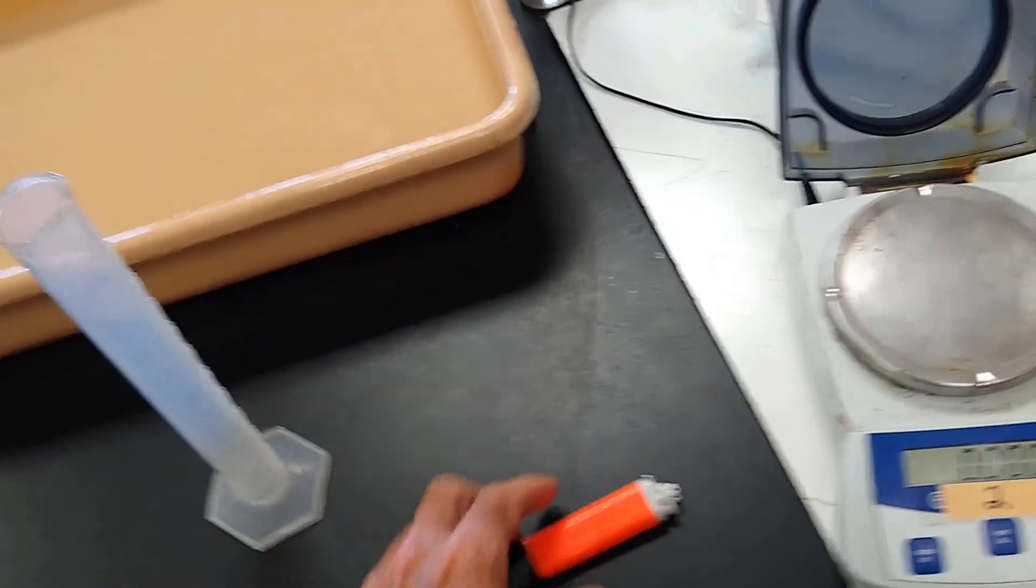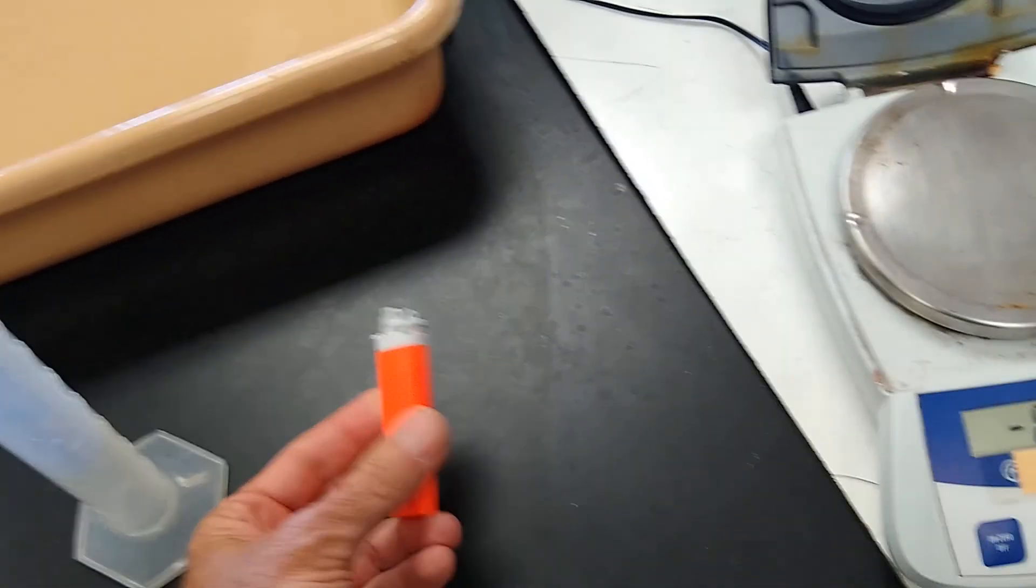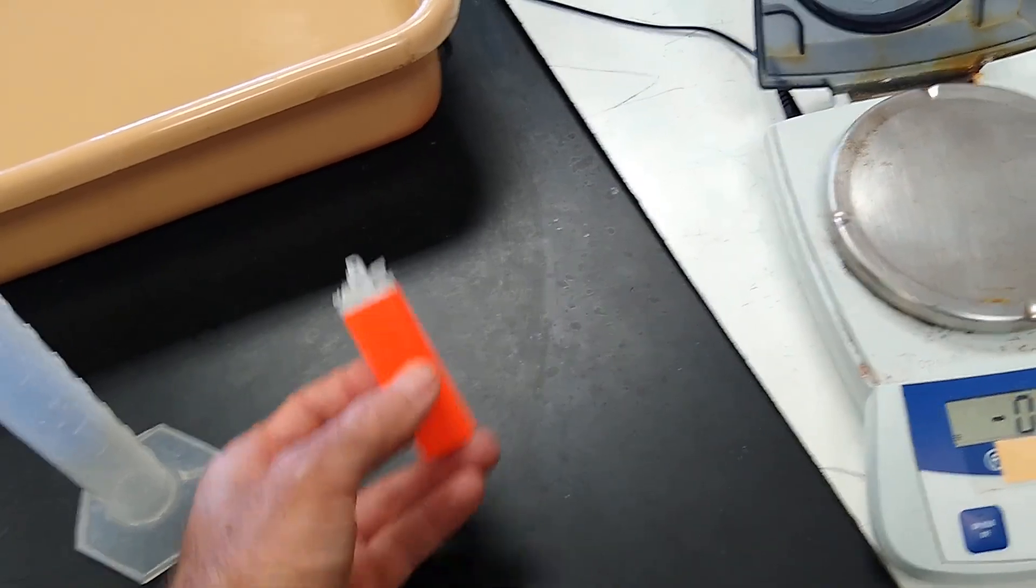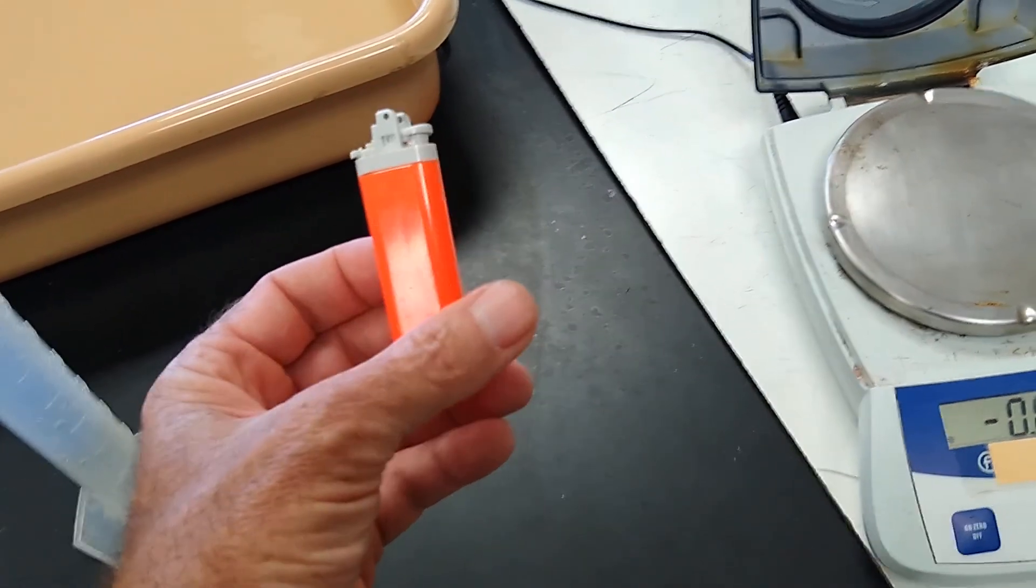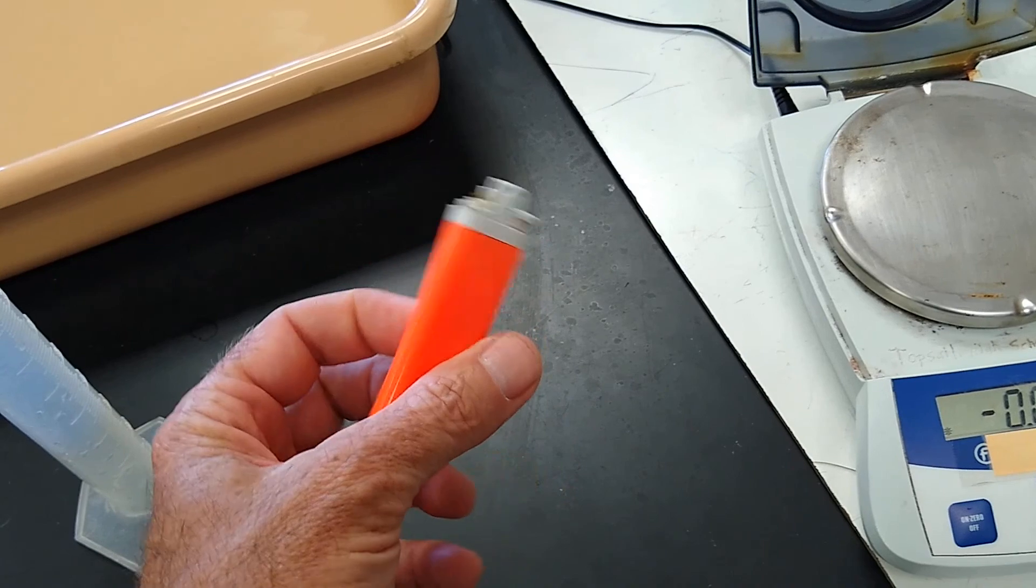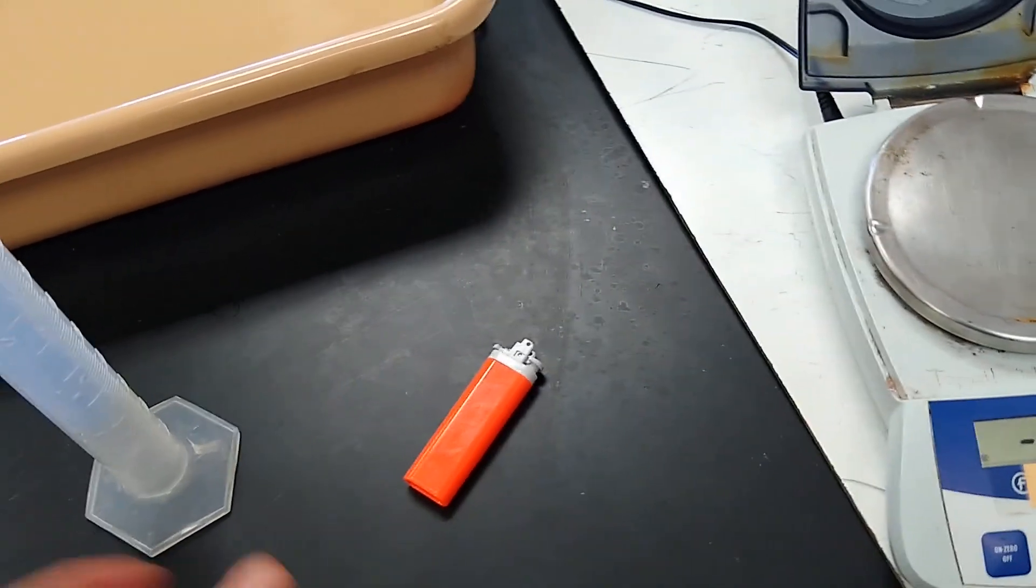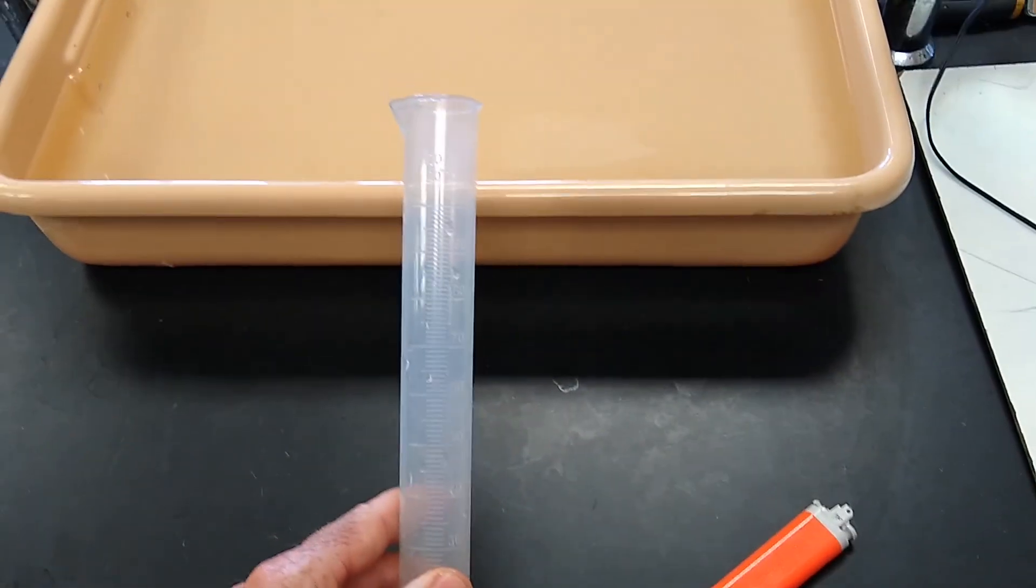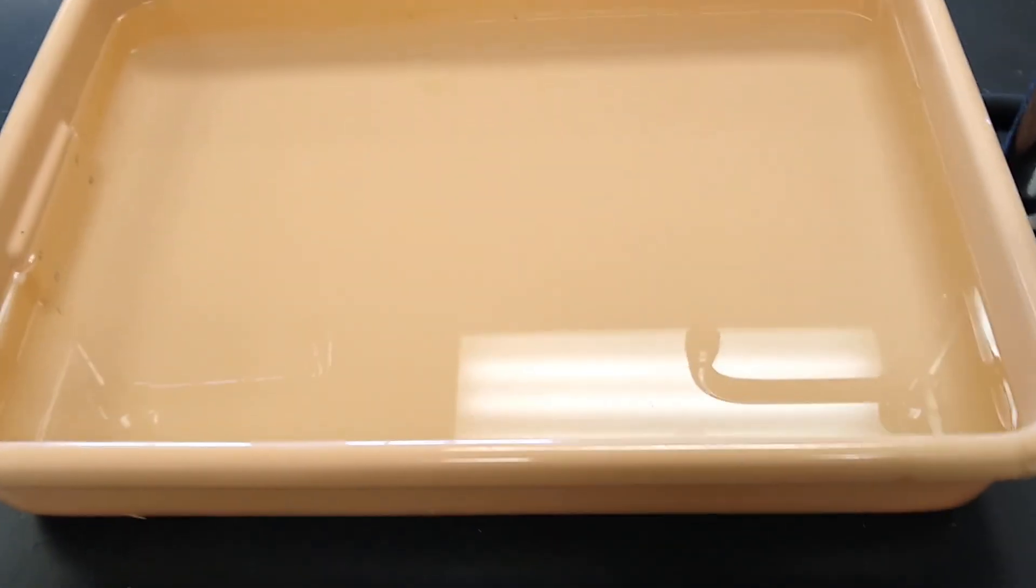Alright everyone, we're going to do a lab called the lighter lab. We're going to figure out what gas is in this lighter by doing a little experiment. All it takes is a graduated cylinder, some water, and a scale. Let's get started.